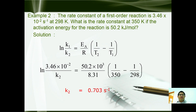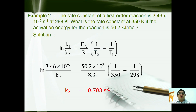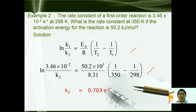For example, the rate constant of a first-order reaction is 6 × 10⁻² s⁻¹ at a given temperature. What is the rate constant at 350 K if the activation energy is 50.2 kJ/mol? Using ln(k₁/k₂) = (Ea/R)(1/T₂ − 1/T₁) and substituting the values accordingly, we get k = 0.703 s⁻¹.